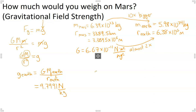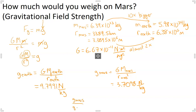If we do the same thing for Mars — taking the universal constant and multiplying that by the mass of Mars, then dividing by the radius of Mars squared — we end up getting a value of 3.7098 newtons per kilogram. And so we compare those two numbers simply by dividing: g of Mars divided by g of Earth gives us 0.379. In other words, your weight on Mars is 37.9% of what it is on Earth.